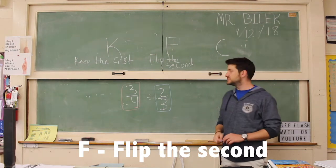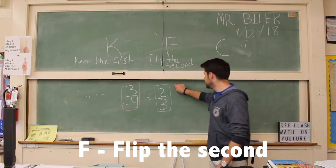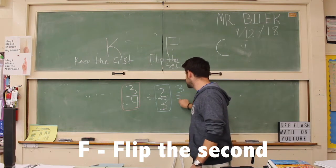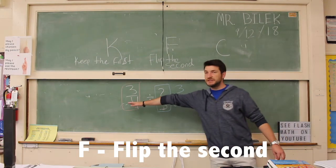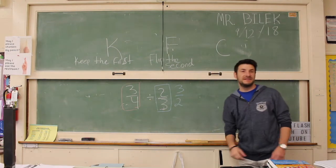Lisa, what is the reciprocal of two-thirds? Three-halves. Perfect. So we're just going to put three over two. That's our second step done. We've kept the first one the same, and we've flipped the second one.